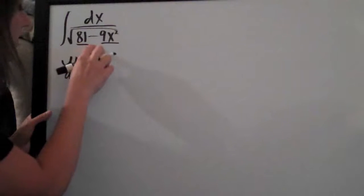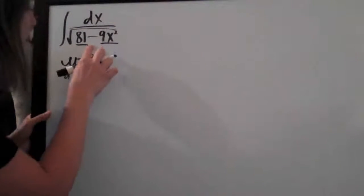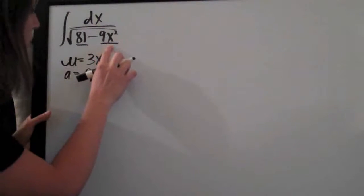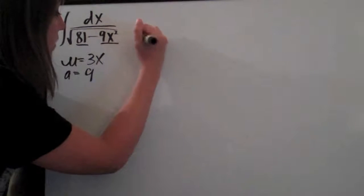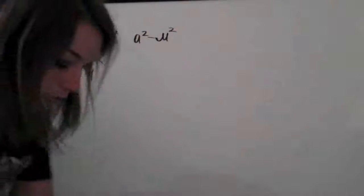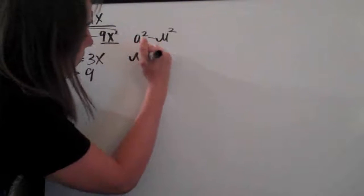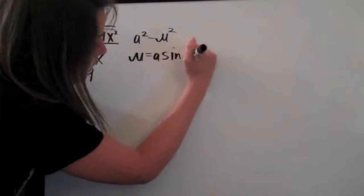Then we look to see what our trigonometric substitution will be. Because this represents a and this represents u, we have a squared minus u squared. So if we look at our reference here, for a squared minus u squared, the substitution we're going to be using is u equals a sine of theta.